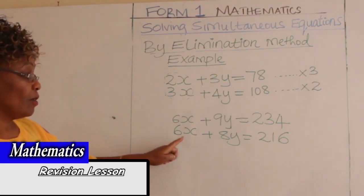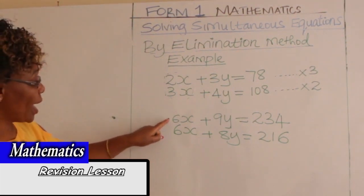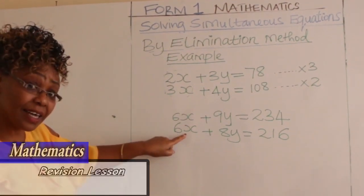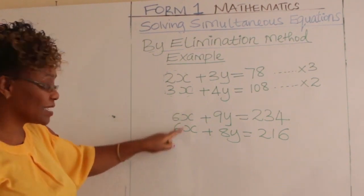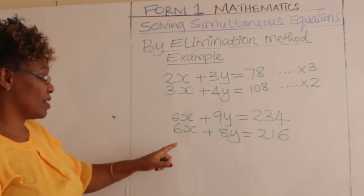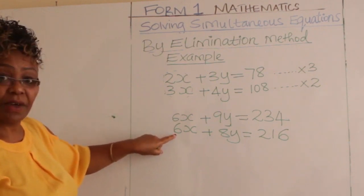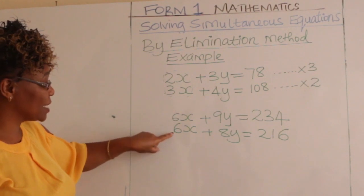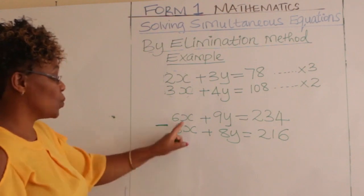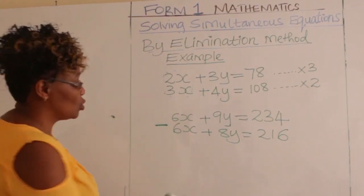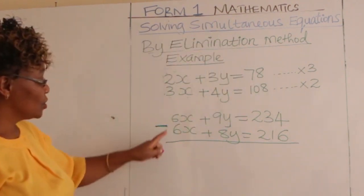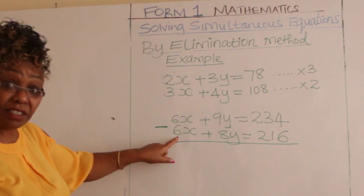Now we have 6x in both equations. To eliminate the x terms, we subtract one equation from the other. Put a line and subtract: 6x minus 6x gives us 0, so the x terms are eliminated.